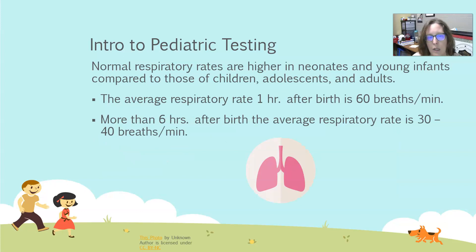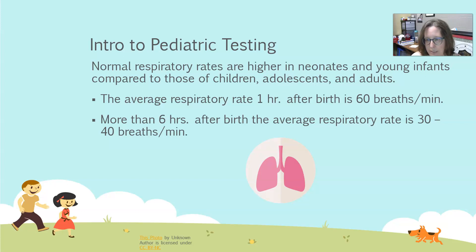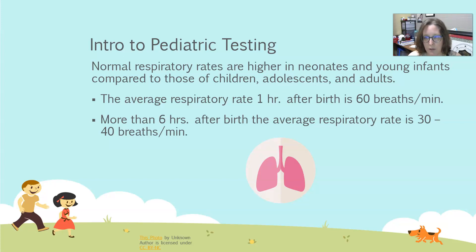For example, the normal respiratory rates are higher in neonates and young infants compared to those of children, adolescents, and adults. The average respiratory rate one hour after birth is 60 breaths per minute. More than six hours after birth it's 30 to 40 breaths per minute, and then a normal adult's respiratory rate would be something like 12 to 20 per minute — so there's definitely some variation there.